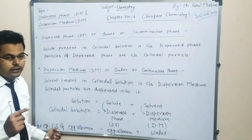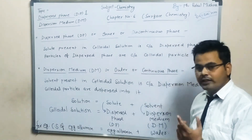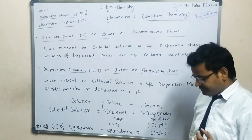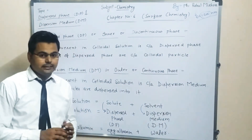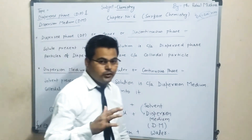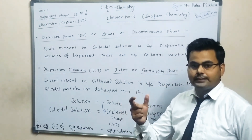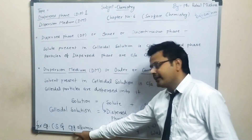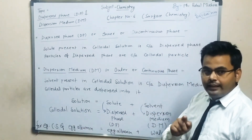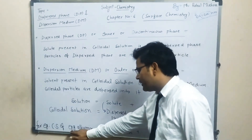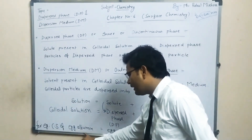For example, the colloidal solution of egg albumin. What is egg albumin? We all know about eggs — inside the egg, leaving the yellow yolk, the transparent liquid that is present, that transparent liquid is albumin protein. That transparent liquid is called as egg albumin.